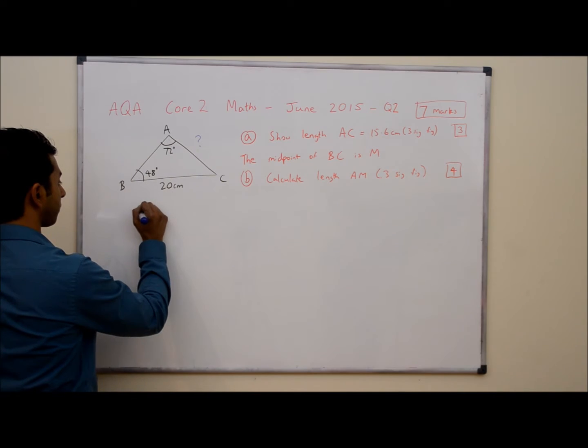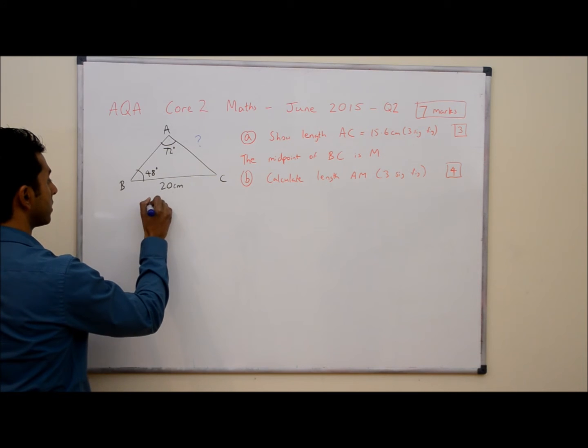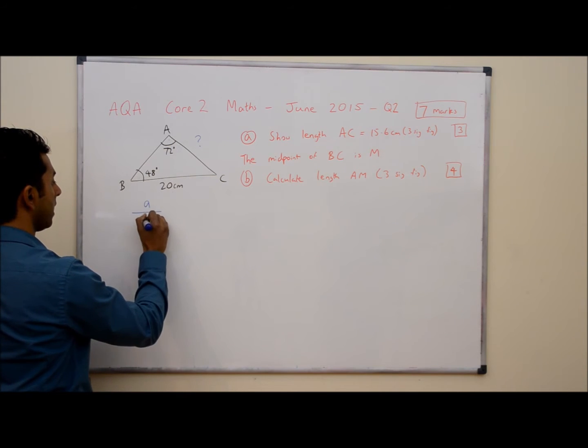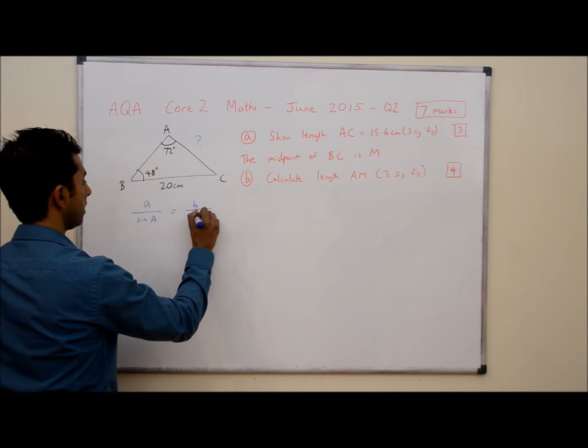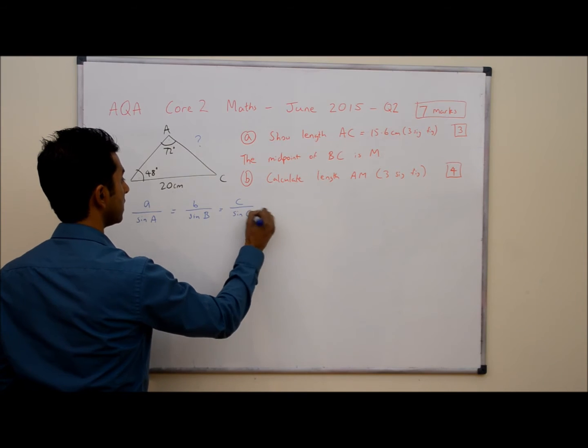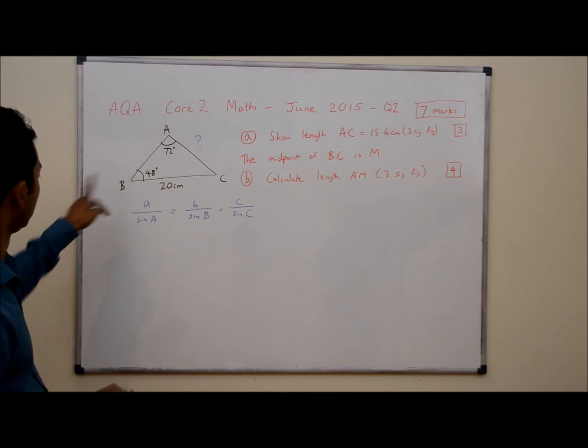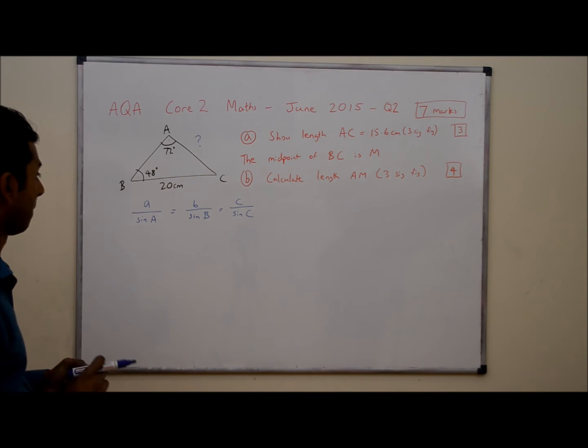The sine rule is going to be the sine rule for length. So it's going to be A over sine A equals B over sine B equals C over sine C. Now I'm going to leave the lettering exactly as it is because it's a sine rule, it doesn't matter too much on this.